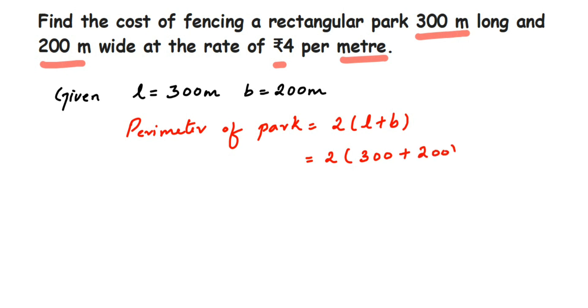So 300 plus 200 is 500, so 2 into 500 which is equal to 1000. So we got 1000 meters. The perimeter of the rectangular park is 1000 meters. Now we have to find out the cost.